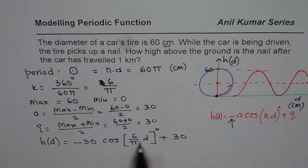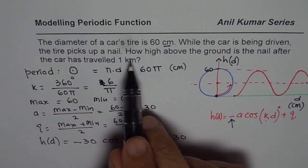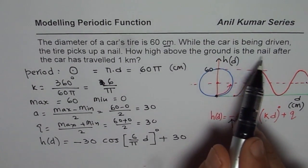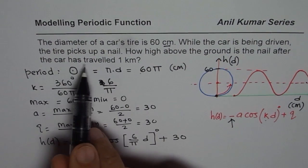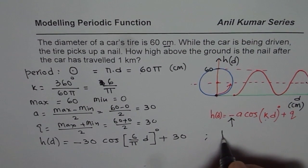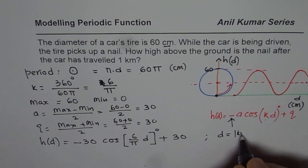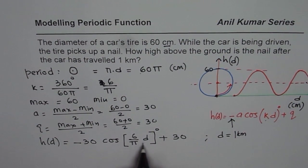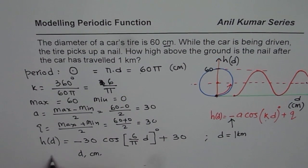Once you have equation, then you can find the height of the nail at an instance of time. And since we have converted time to distance, it says how high above the ground is the nail after the car has traveled 1 kilometer. So now your distance is, let's say, 1 kilometer. So what you can do is you can write d as 1 kilometer. Remember, in our case, d is in centimeters.